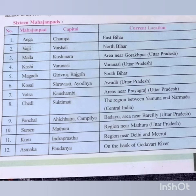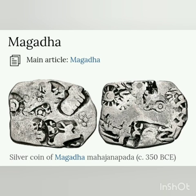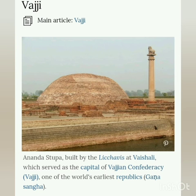Kuru belonged to the Puru-Bharata family. These were the people who originated from Kurukshetra, and their capital was at Indraprastha. Panchala covered the area of present western UP and east of the river Yamuna up to Kosala. Shurasena witnessed great transformation in religion, with its capital at Mathura. Matsya was located to the south of Kuru and west of the river Yamuna, covering the area of Alwar, Bharatpur, and Jaipur in Rajasthan.